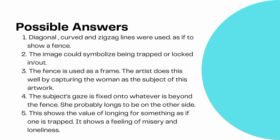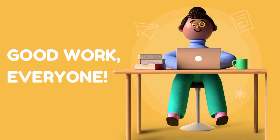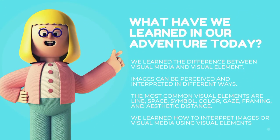Good work, everyone! Now, it's time to summarize what we have learned in our adventure today. First, we learned the difference between visual media and visual element. Second, images can be perceived and interpreted in different ways. Third, the most common visual elements are line, space, symbol, color, gaze, framing, and aesthetic distance. And lastly, we learned how to interpret images or visual media using visual elements.